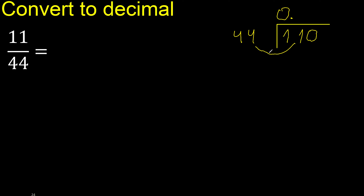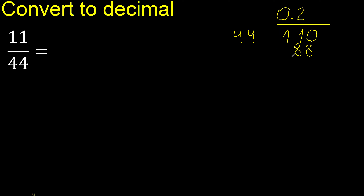110 is not less than 44. Multiply by which number is nearest to 110 but not greater — multiply by 3 is greater, multiply by 2 is 88, which is not greater. Subtract: result is 22. There is no number that goes down, therefore complete — always complete with 0.